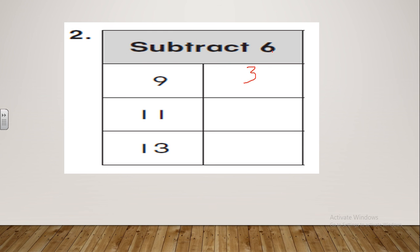Let's see the next one — eleven minus six. Let's count back: before eleven, ten, nine, eight, seven, six, five. So eleven minus six equals five. Super! Now make this one alone — it's thirteen minus six. Try to find the result and I'm waiting for you. I can hear you — thirteen minus six equals seven. That's great! Great job, excellent.